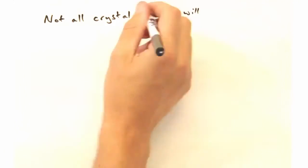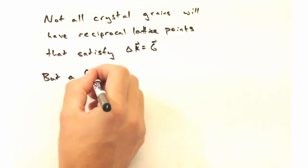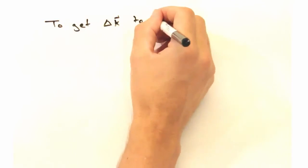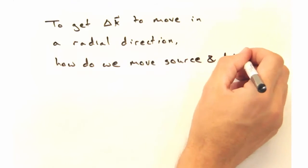And while not all of the crystal grains will have reciprocal lattice points at some particular point along the sphere, some grain will, and that's enough to give us constructive interference. So to get delta k to move in the radial direction, how do you think we want to move our source and detector?